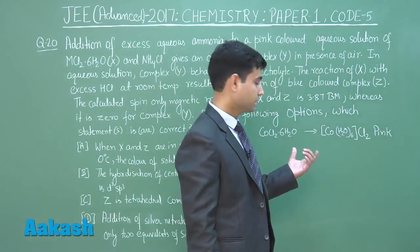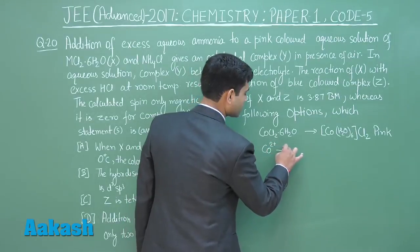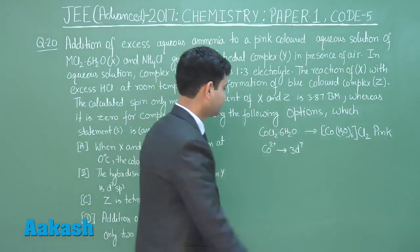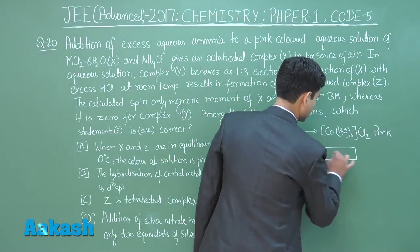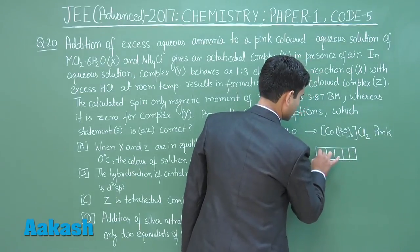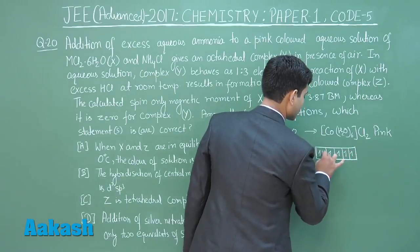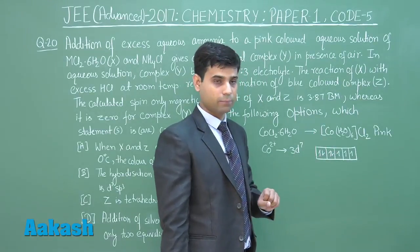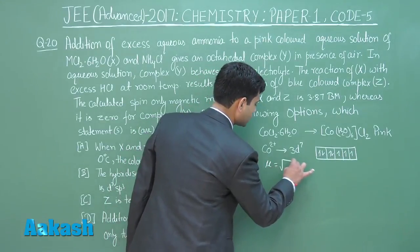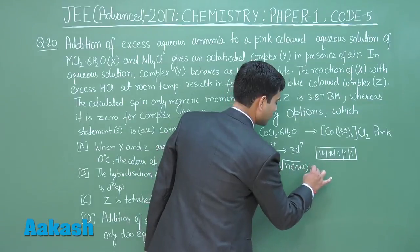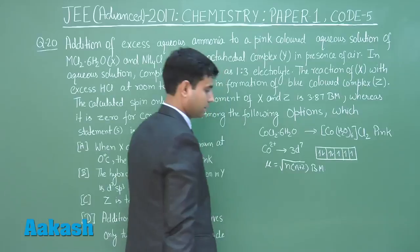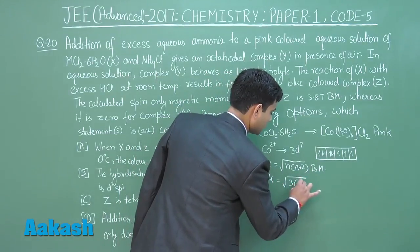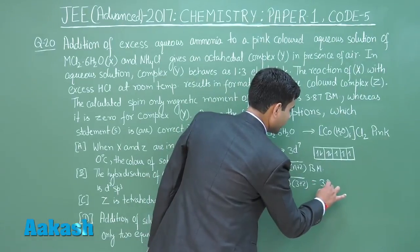This has Co2+ ion. Co2+ has 3d7 configuration. With weak field ligand H2O, we have 3 unpaired electrons. That means 3.87 spin-only magnetic moment. As we know, spin-only magnetic moment is square root of n(n+2) Bohr magneton. If we put n=3, we get 3.87 Bohr magneton.